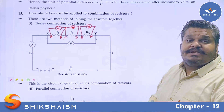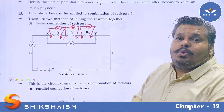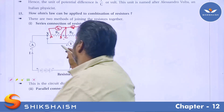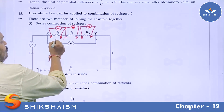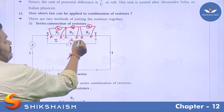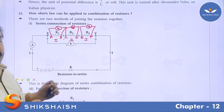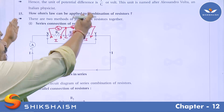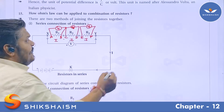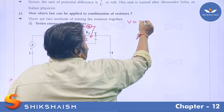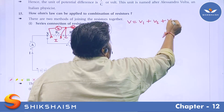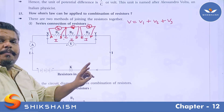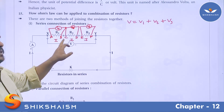Again, the definition of series connection of resistors: the resistors are connected such that an equal amount of electric current passes through all of them. The same electric current I passes through R1, R2, and R3. Only the voltage drop changes between R1, R2, and R3. If the total voltage drop is denoted by V, then according to the formula: V = V1 + V2 + V3. The total voltage drop across terminals X and Y equals the sum of the drops across terminals ab, cd, and ef.